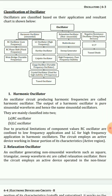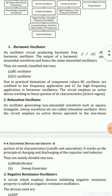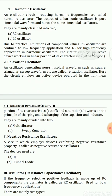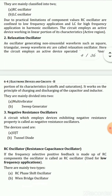Relaxation oscillators generate non-sinusoidal waveforms such as square waves, triangular waves, and sweep waveforms. In these circuits, active devices are operated in the non-linear region of their characteristics — that is, cut-off and saturation — and they work on the principle of charging and discharging of capacitors and inductors. They are divided into two types: multivibrators and sweep generators.